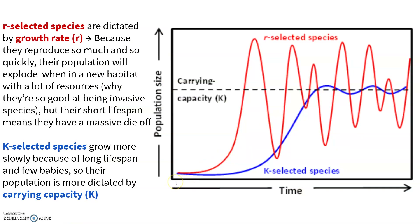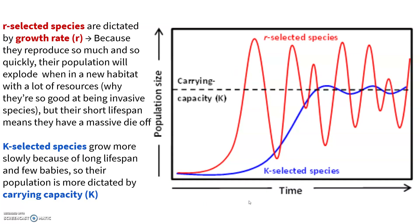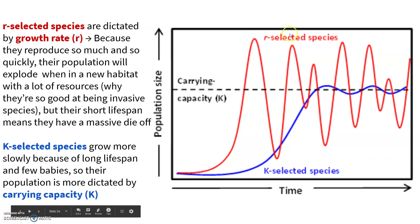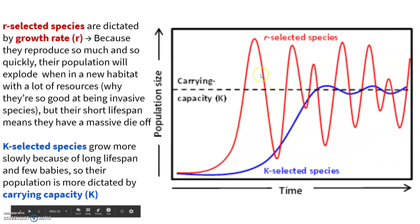I want to go back to why R-selected and K-selected species are called what they are. R-selected species reproduce so quickly that their population will explode, overshoot carrying capacity, and then have a massive dieback. Because they have a short lifespan, a small population can quickly access lots of resources, grow rapidly, and then oscillate back and forth. Their species is so dependent on growth rate — that's why we call them R-selected species. R is the abbreviation for growth rate.